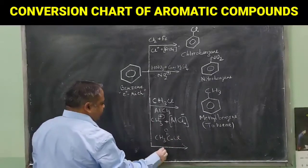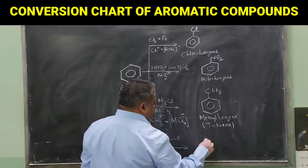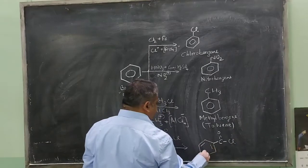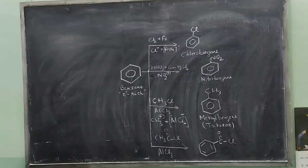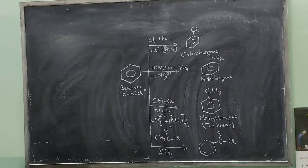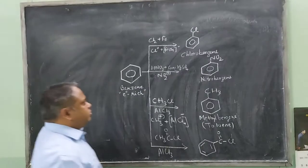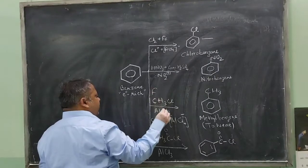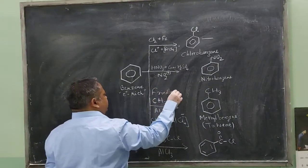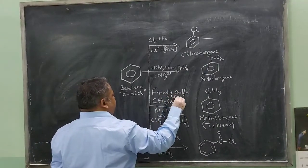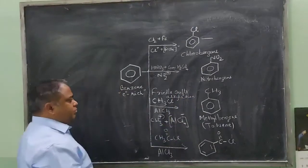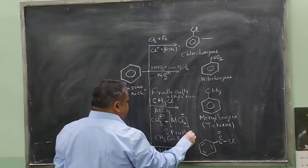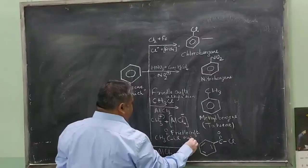Common name is toluene and IUPAC name is methylbenzene. Similar to this, if you provide CH3COCl plus AlCl3, this will form COCl plus. This reaction is also called Friedel-Crafts Alkylation. This is called Friedel-Crafts Acylation.